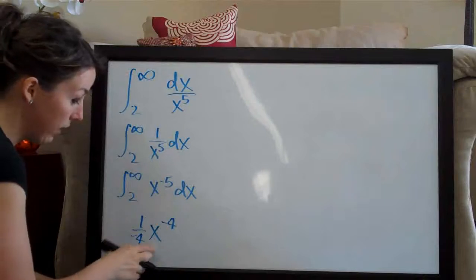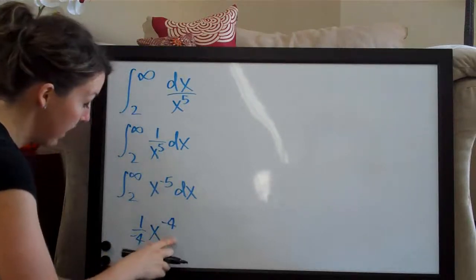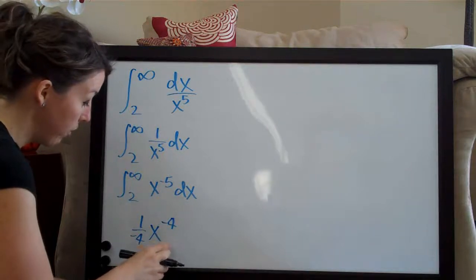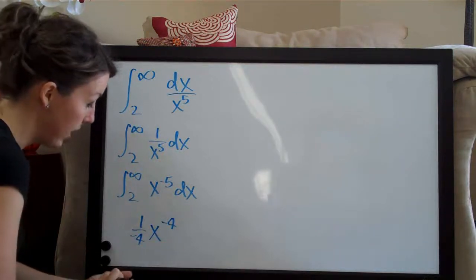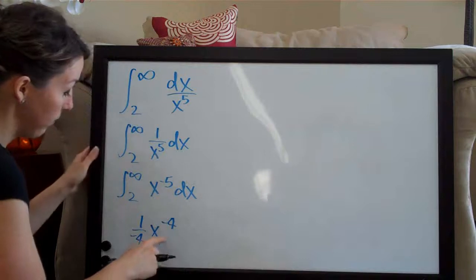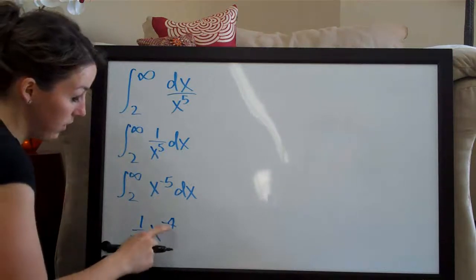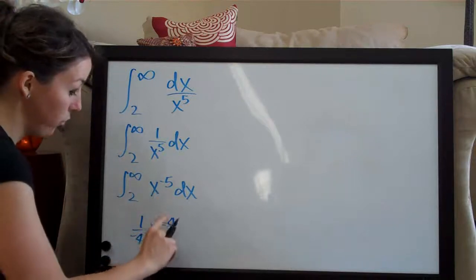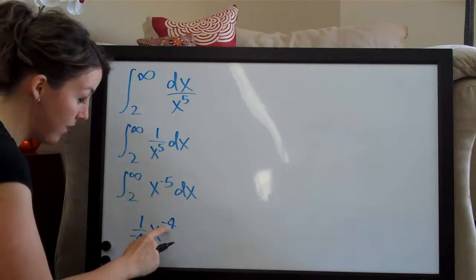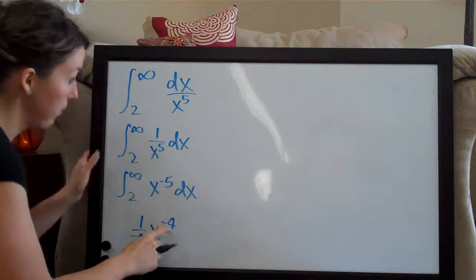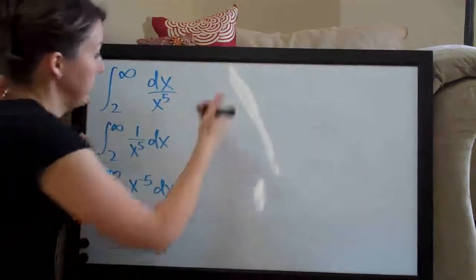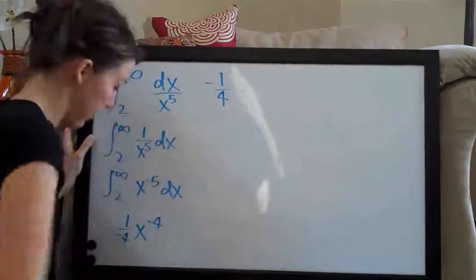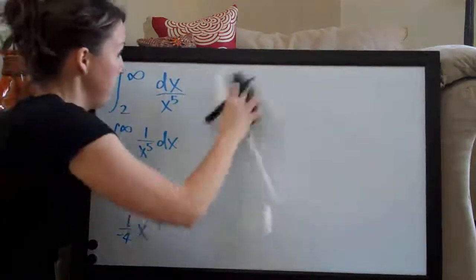So we've got negative one-fourth x to the negative four and that's our integral. I'm going to go ahead though and change this so that the exponent on the x is not negative. And like I said before, we can just move that to the bottom again and that'll become a positive four.